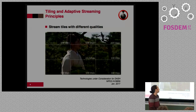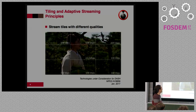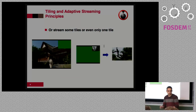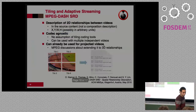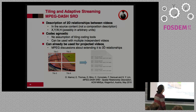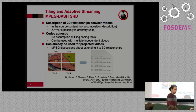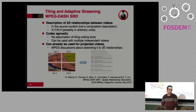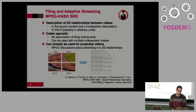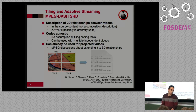The principle of tiling is quite simple: we cut the video into different parts and we have the possibility to have different quality in each part. We can also choose to play just some tiles or just one. In MPEG-DASH we have a notion called SRD, which represents the spatial relationship between videos. It's defined in the source content, it's codec agnostic, there is no assumption of tile coding tools, and it can be used with multiple and dependent videos. It's already been used for projected videos, and there is discussion to extend it to 3D spatial relationships.